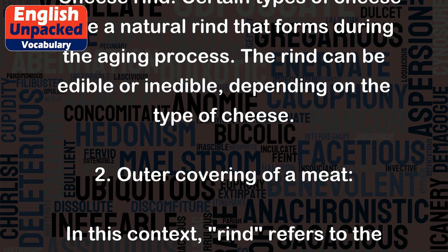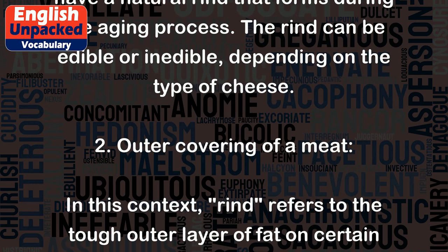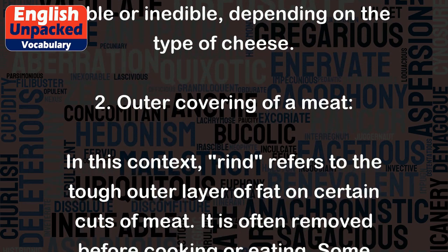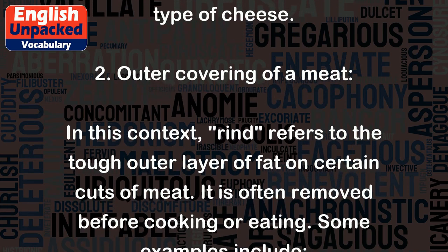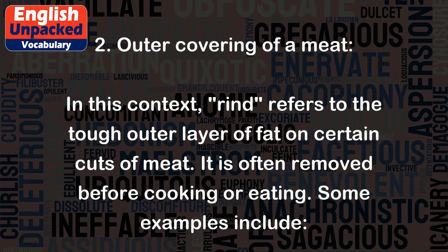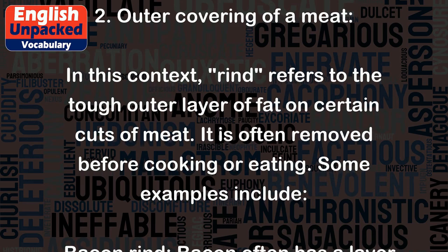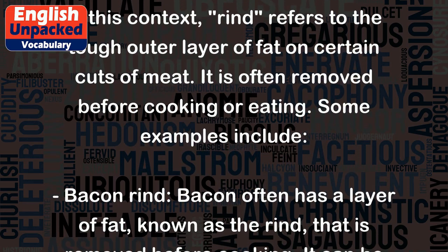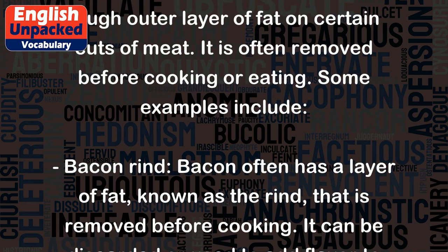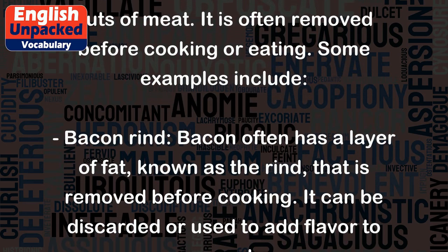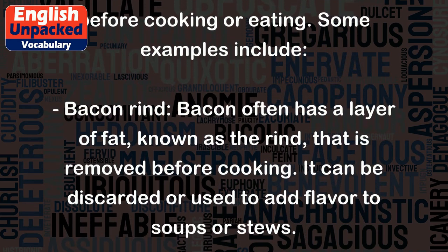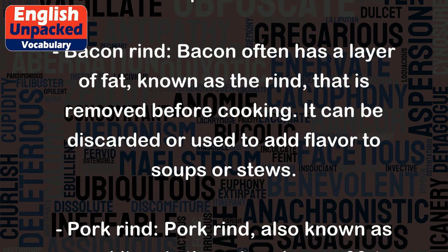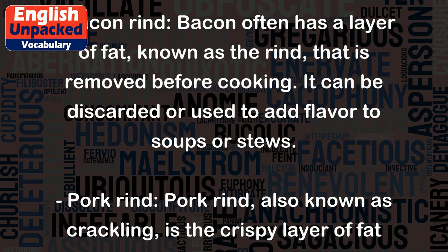Outer covering of a meat: in this context, rind refers to the tough outer layer of fat on certain cuts of meat. It is often removed before cooking or eating. Bacon often has a layer of fat known as the rind that is removed before cooking. It can be discarded or used to add flavor to soups or stews.